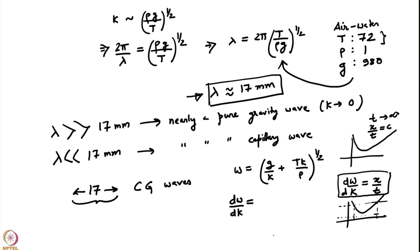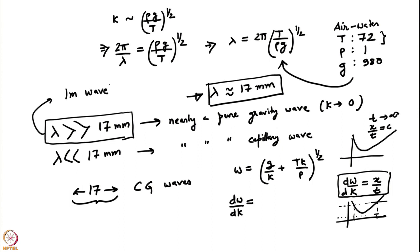Now let us look at the limit of λ much greater than 17 mm. In the case of air-water, if we deal with a 1-meter wave, which would be the case in an oceanic context, waves are almost exclusively gravity waves. Tsunamis are entirely gravity waves; in fact they do not even behave like deep water waves, as we will see shortly.